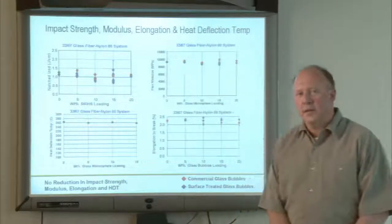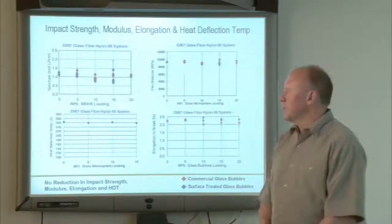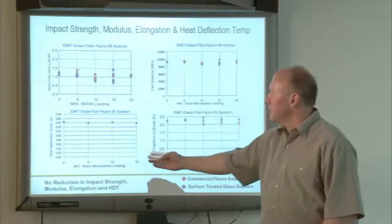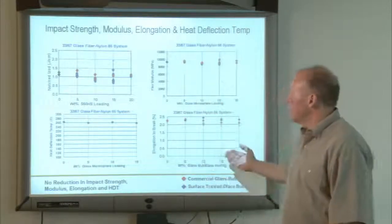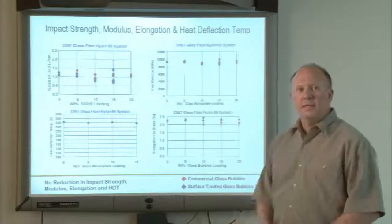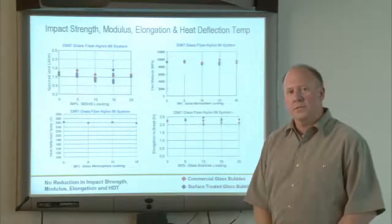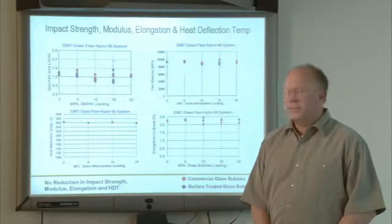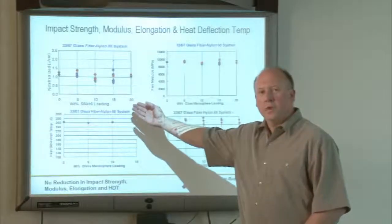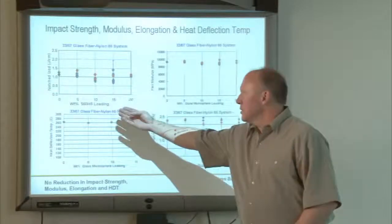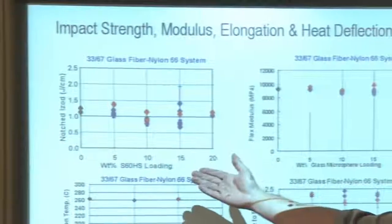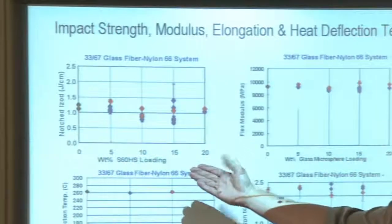Here on this series of graphs, I'm showing impact strength, flex modulus, heat deflection temperature, and elongation to break of a nylon glass-fiber-filled system — 33% glass fiber in this nylon resin system. We've added glass bubbles at higher and higher weight percent loading, as shown on the x-axis, and looked at the trend of each physical property as we add glass bubbles to this composite.